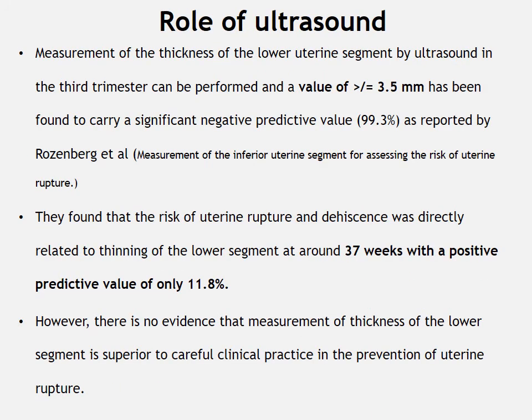The role of ultrasound: measurement of the thickness of the lower uterine segment by ultrasound in the third trimester can be performed. A value of ≥3.5 mm has been found to carry a significant negative predictive value of 99.3%. It has also been reported that uterine rupture and dehiscence were directly related to thinning of the lower segment at around 37 weeks, with a positive predictive value of only 11.8%. However, there is no evidence that measurement of lower segment thickness is superior to careful clinical practice in prevention of uterine rupture.